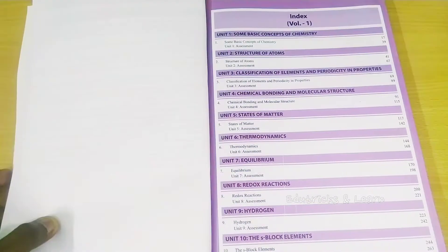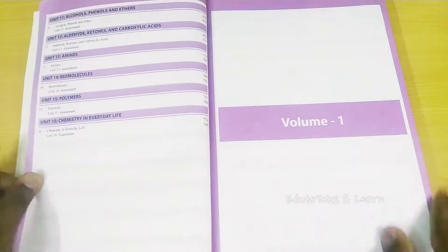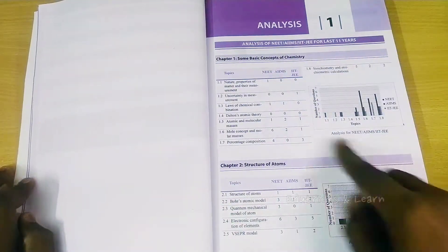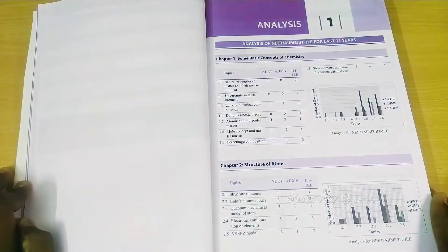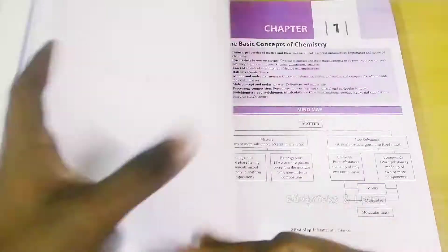At first, they've given the index for volume 1, which is complete 11th standard, and they've given index for volume 2. In volume 1, they're starting with analysis of last 11 years of NEET, AIIMS, and JEE. They've given the comparison of all three.